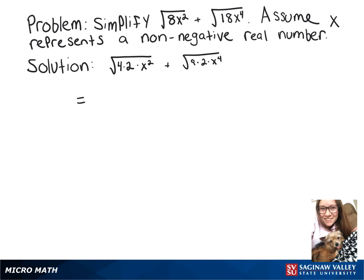So 4 being a perfect square and x squared being a perfect square can come out and turn into 2x, and then underneath the square root is still 2.